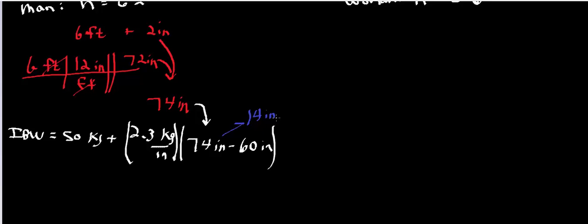So let me go ahead and calculate this. So let's take 2.3, and that's kilograms per inch, times 74 minus 60, which we already said was 14, and I'm getting 32.2, but then I have to add on 50 kilograms. So it turns out that the ideal body weight for this person is going to be 82.2 kilograms.